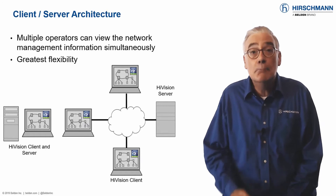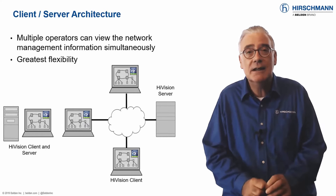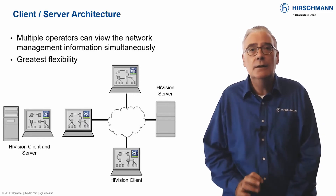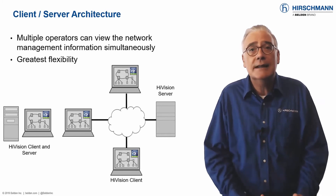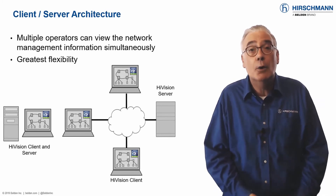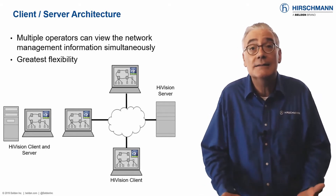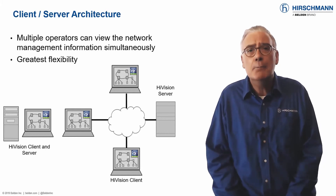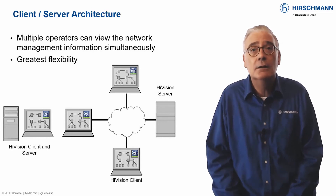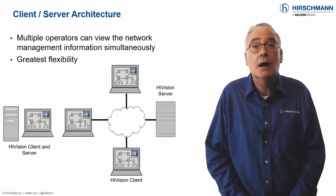For larger installations, multiple clients running on separate devices can access the same server simultaneously. This provides many advantages. Industrial operators can supervise their own network segment. Faults can be propagated to multiple clients, ensuring they are noticed more quickly. A network can be monitored locally and remotely at the same time. If you have a larger network, take advantage of the client-server architecture.